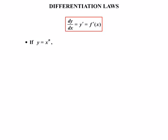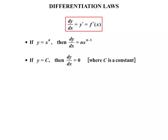So a few rules. If y equals x to the n, then dy/dx equals n times x to the n minus 1. If y equals c where c is a constant, then dy/dx is simply 0. If y equals a times x to the n, then dy/dx is equal to a times n times x to the n minus 1.